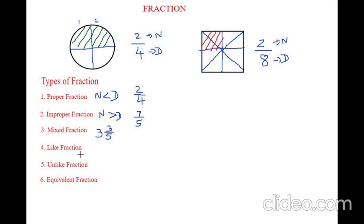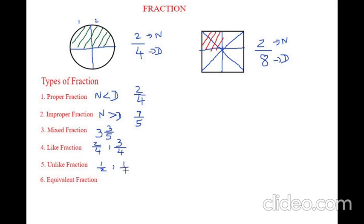Now let's see what is a like fraction. Like fractions are fractions that have the same denominator. For example, 2 by 4 and 3 by 4 are like fractions because the denominators are the same. Unlike fractions, on the other hand, have different denominators. For example, 1 by 2 and 1 by 3 — here the denominators are different, so they are called unlike fractions.